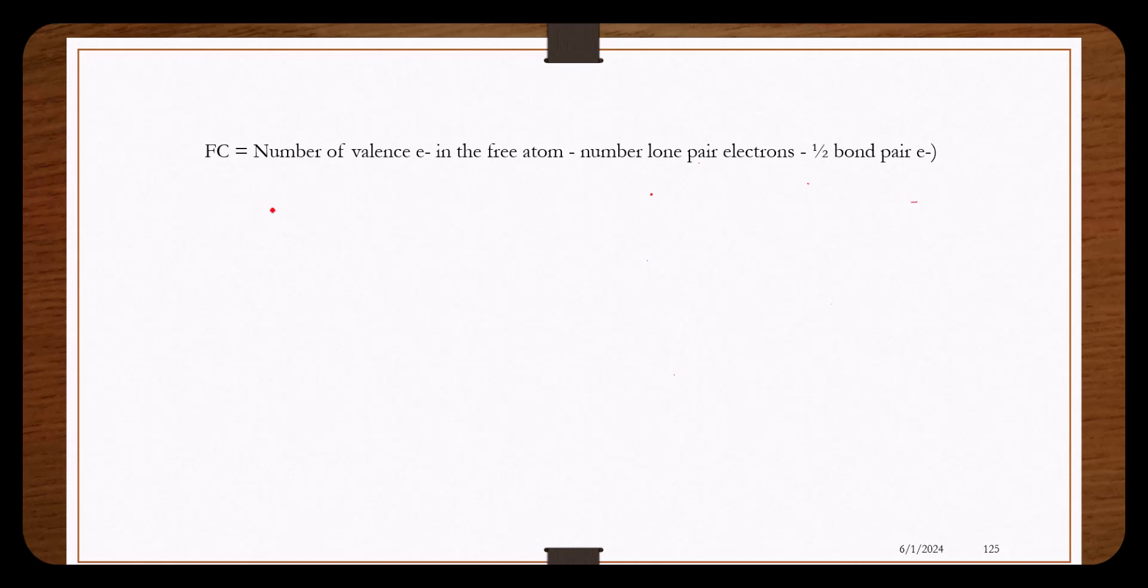In a previous video, we used this equation to calculate formal charge. I want to go to this part of the equation, and it says we only use half of the bond pair electrons when calculating a formal charge. So this part of the equation best describes what we're actually doing.